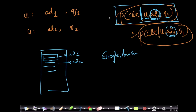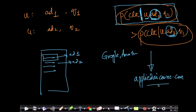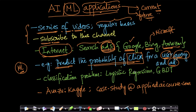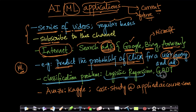Computing these conditional probabilities is one of the key machine learning problems in sponsored search. For those who know some machine learning, this can be posed as a standard classification problem. In industry, most companies use techniques like logistic regression or gradient boosted decision trees to solve this problem.